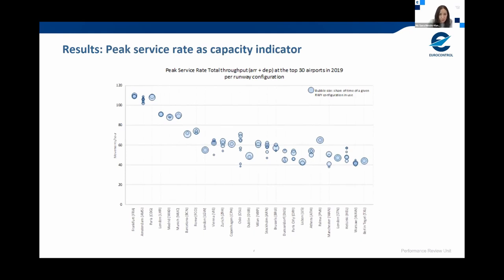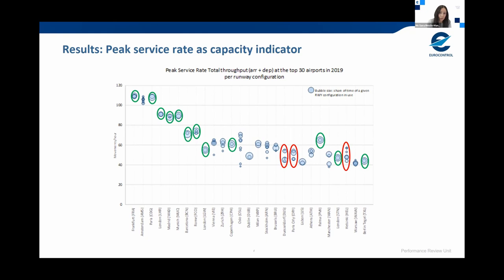This figure shows peak service rate results for each configuration of the 30 busiest European airports in 2019, illustrating the imbalances detected in capacity. For each airport, one bubble per identified runway configuration indicates on the vertical axis the observed peak service rate, while bubble size represents the share of time that configuration was active. Many airports like Heathrow, Gatwick, Palma, or Tegel show equal or very similar capacity for any runway configuration. Other airports like Dusseldorf or Helsinki have very different peak service rates for different configurations, with an important share of configurations with lower capacity. Some airports show big capacity differences but these lower-capacity configurations are rarely used.